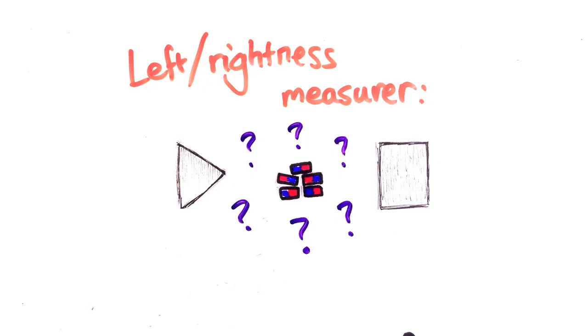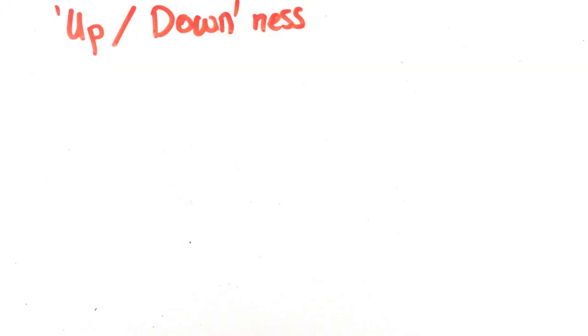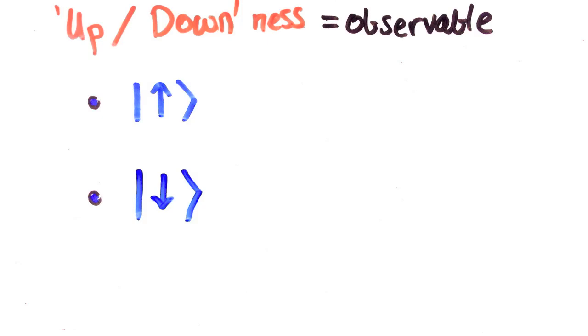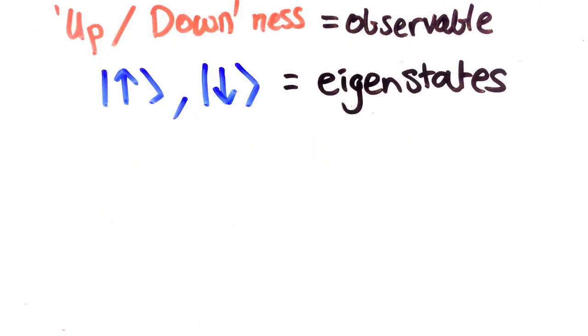Let me explain how to think of this in the framework we built up in the last couple of videos. I can measure the up or downness of a particle, so that is an observable. What are its eigenstates? Well, this experiment showed that the particle can only be fully up or fully down and nothing in between. So they are the only two eigenstates. We'll call them spin up and spin down.